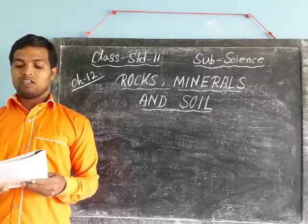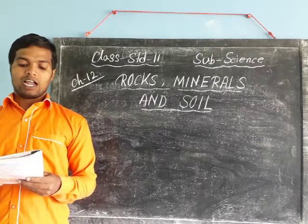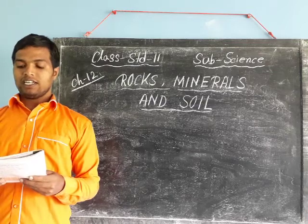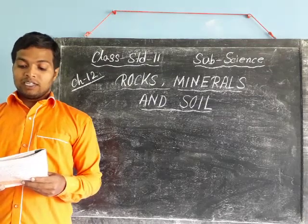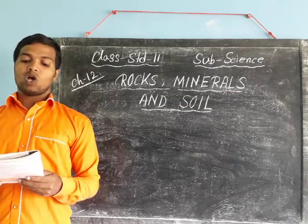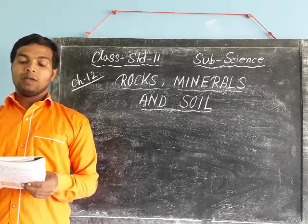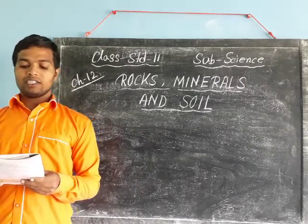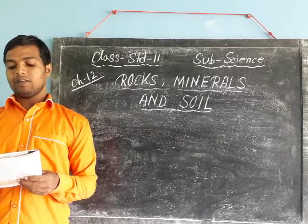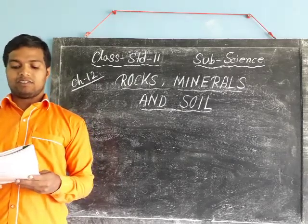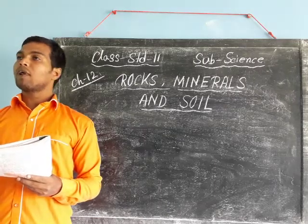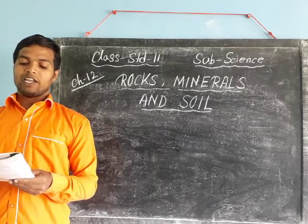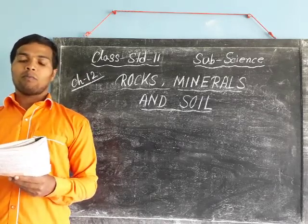Soil is made up of two main parts: tiny pieces of rocks, and rotted pieces of dead plants and animals. The soil is a dark brown color and is very good for the growth of plants.